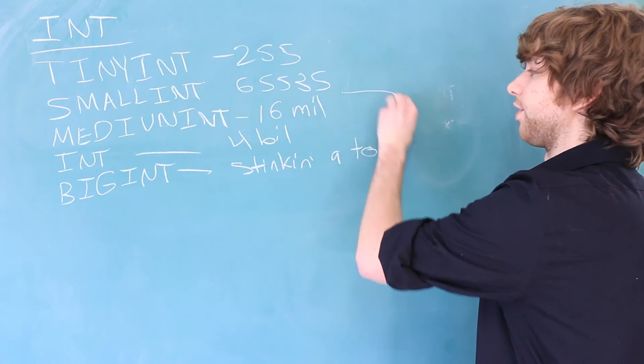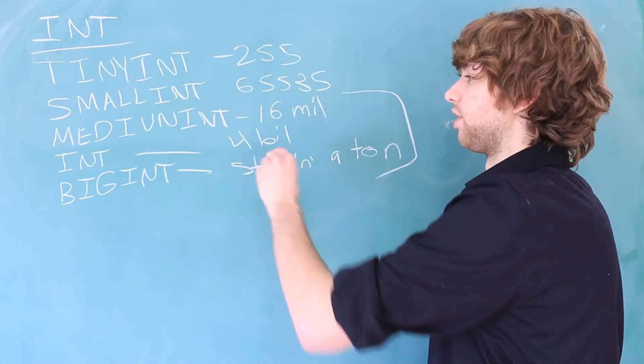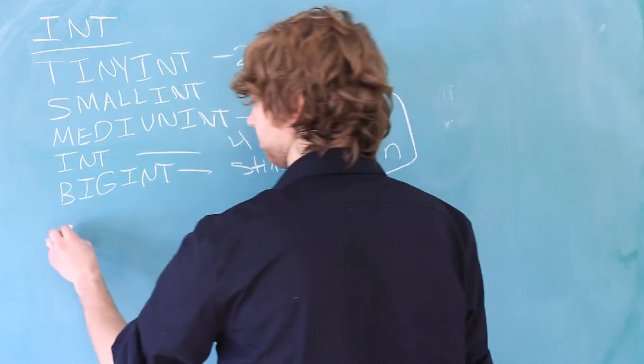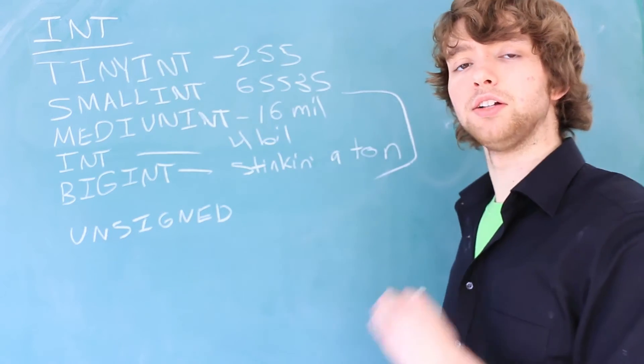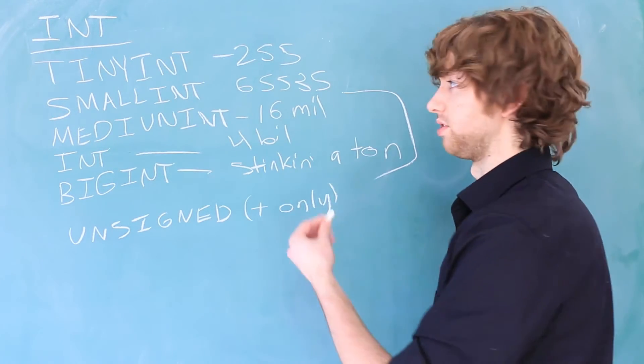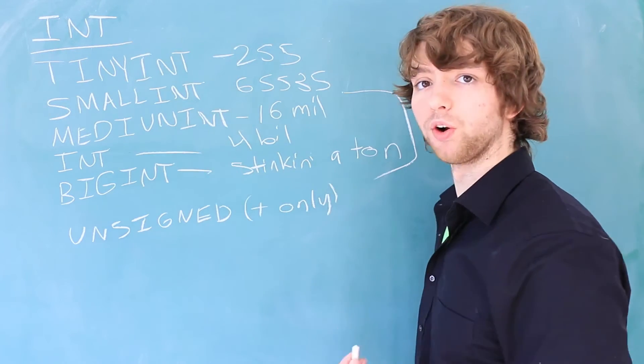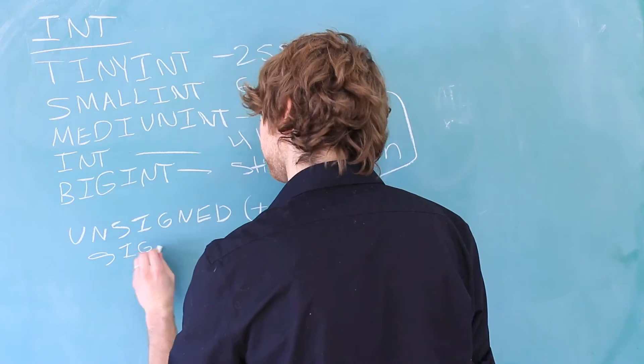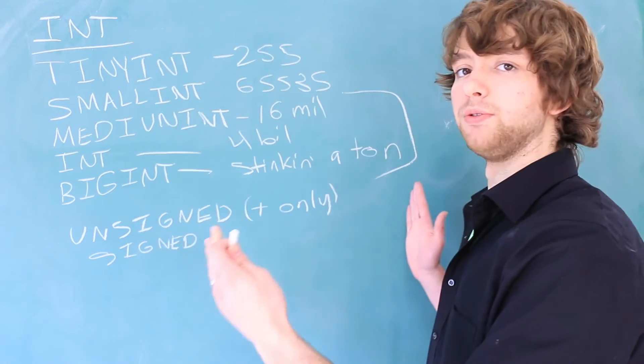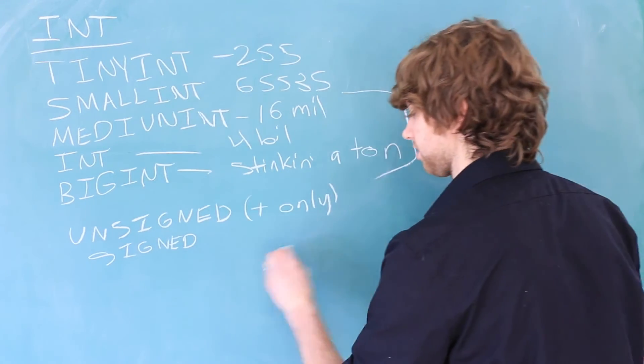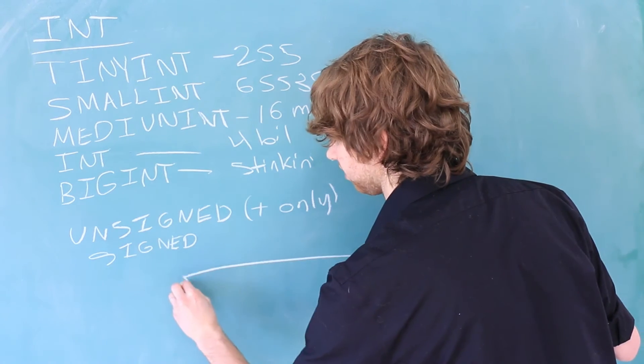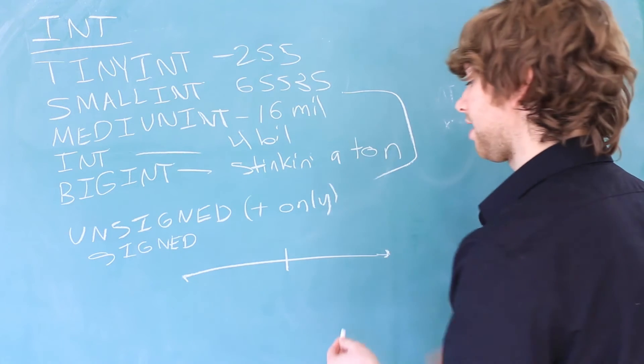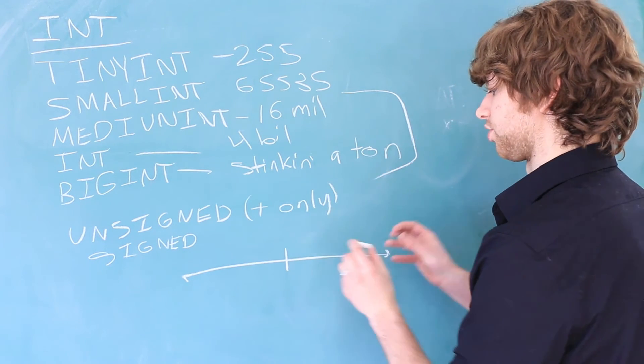Now, these values are for what are known as unsigned integers, and unsigned integers do not allow negative numbers. The benefit of that though is that the highest number you can store is much higher. That's in contrast to signed integers where half of the range of values goes in the negative. Imagine this, here is a number line, here is zero, and let's say the range of values that are allowed is the size of this piece of chalk.